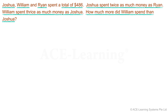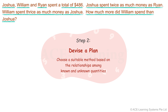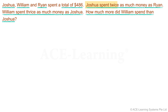Now how do we go about finding the solution to the problem? Let's proceed to the next step. Step 2: Devise a plan. Choose a suitable method based on the relationships among known and unknown quantities. We can see that Joshua's amount is compared to Ryan's, and William's amount is compared to Joshua's. The expenses of the three persons are compared, so we can draw a model to help us see the relationship quickly and solve the problem. We call it the comparison model.